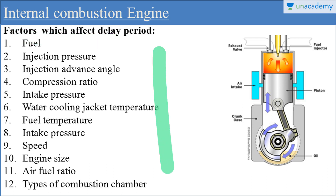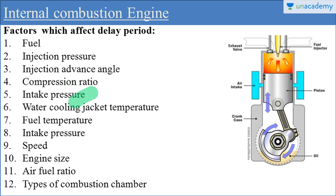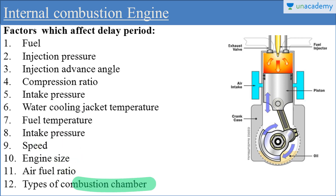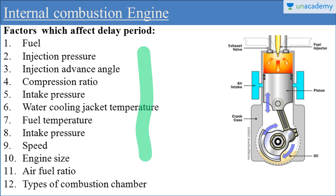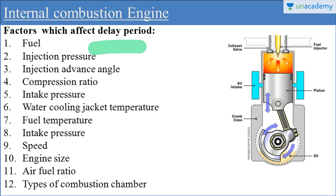These are the variables: fuel, injection pressure, injection advance angle, compression ratio, intake pressure, water cooling jacket temperature, fuel temperature, engine speed, engine size, air fuel ratio, and types of combustion chamber. These variables affect the delay period — it increases or decreases based on changes in these variables.